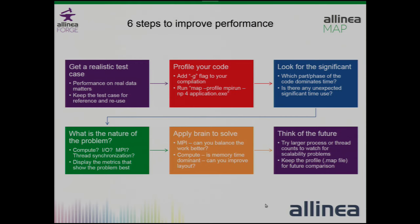We were recently working with a CFD company who had a problem scaling one of their codes. They were about to go off on one angle, but they realized they should profile it first. On 128 cores it was taking four hours and it ended up taking two seconds - that's a good day's work. Once you've profiled and focused on what's significant, try to understand what the problem is: is it compute, I/O, MPI, or thread synchronization? Display the things in MAP that would show that problem best.